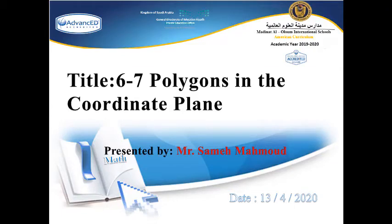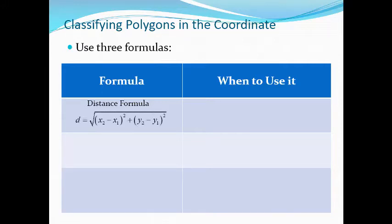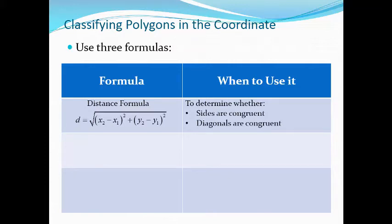Hello everyone. Our lesson today is about classifying polygons in the coordinate plane. To classify polygons, we will use three formulas. Let's remember the distance formula: the square root of (x2 minus x1) squared plus (y2 minus y1) squared. We will use this distance formula to determine whether sides are congruent or the diagonals are congruent.